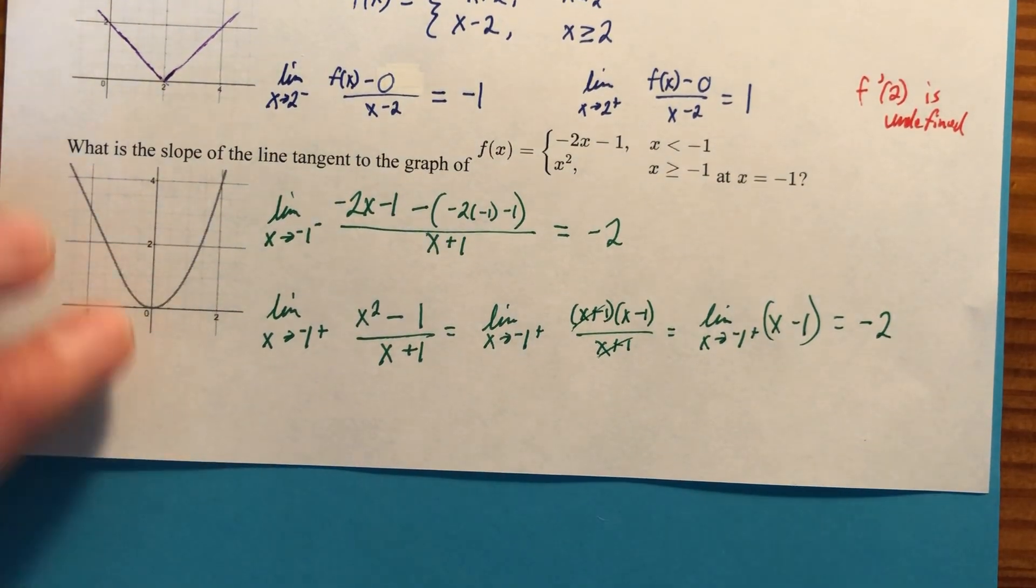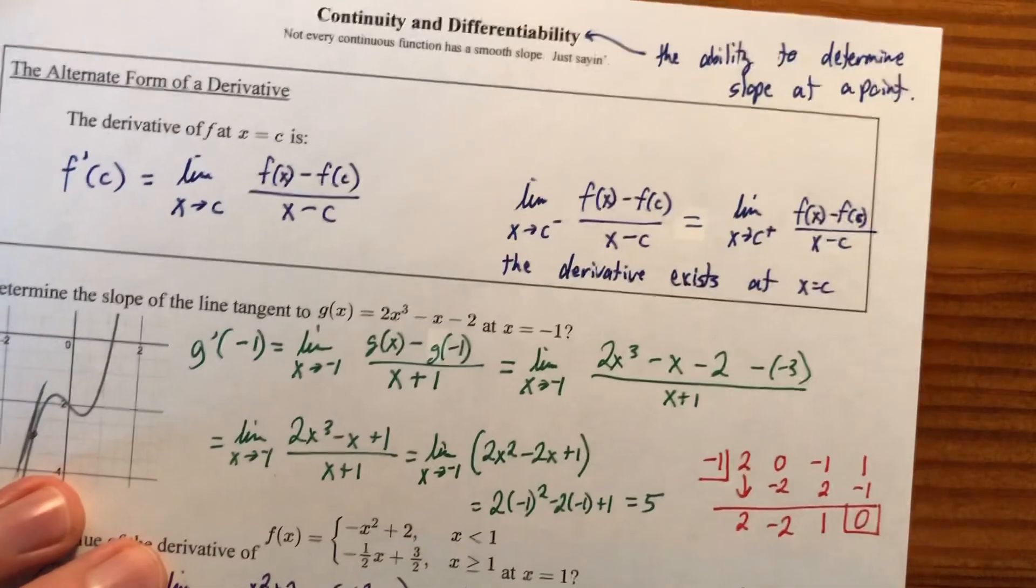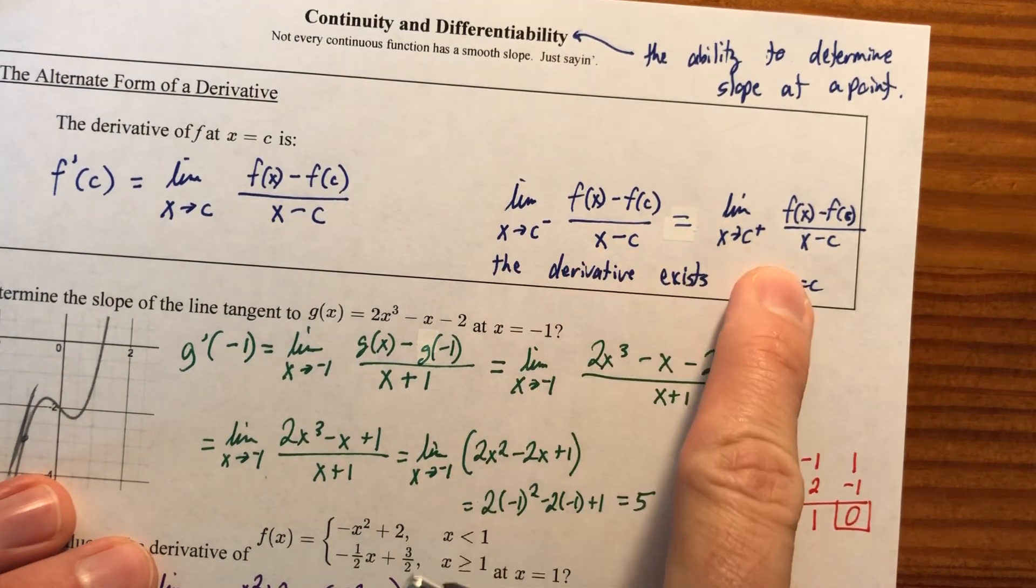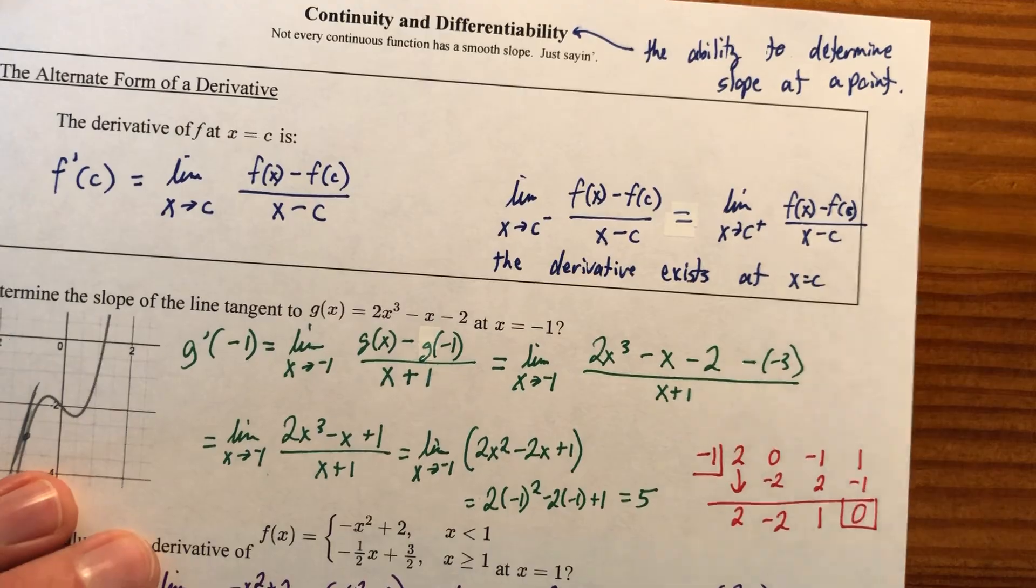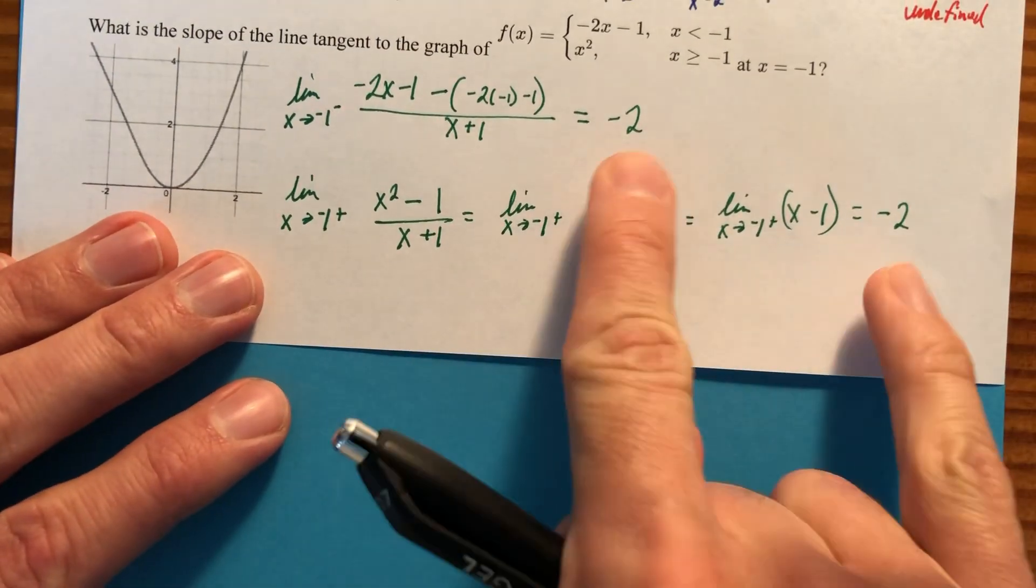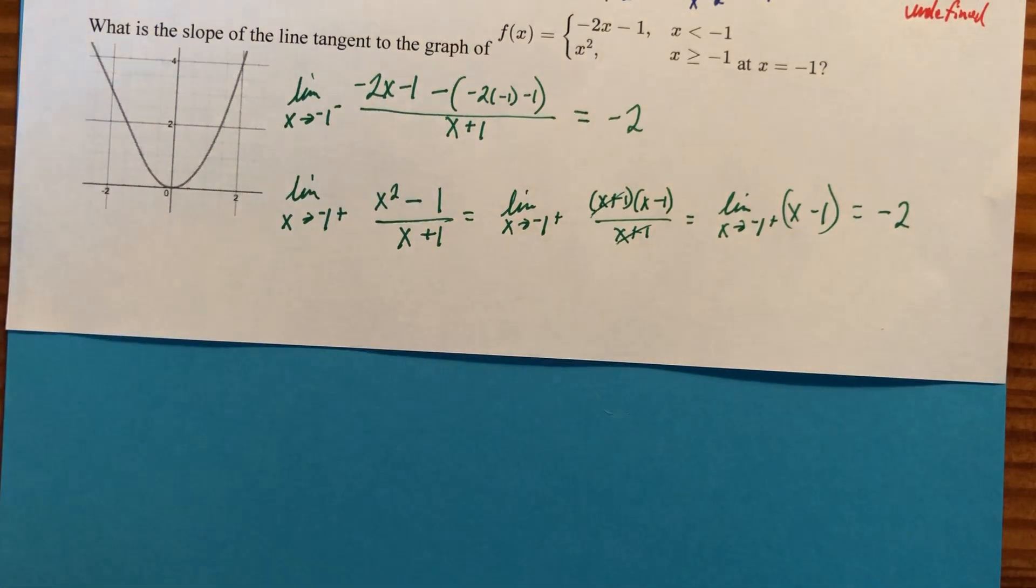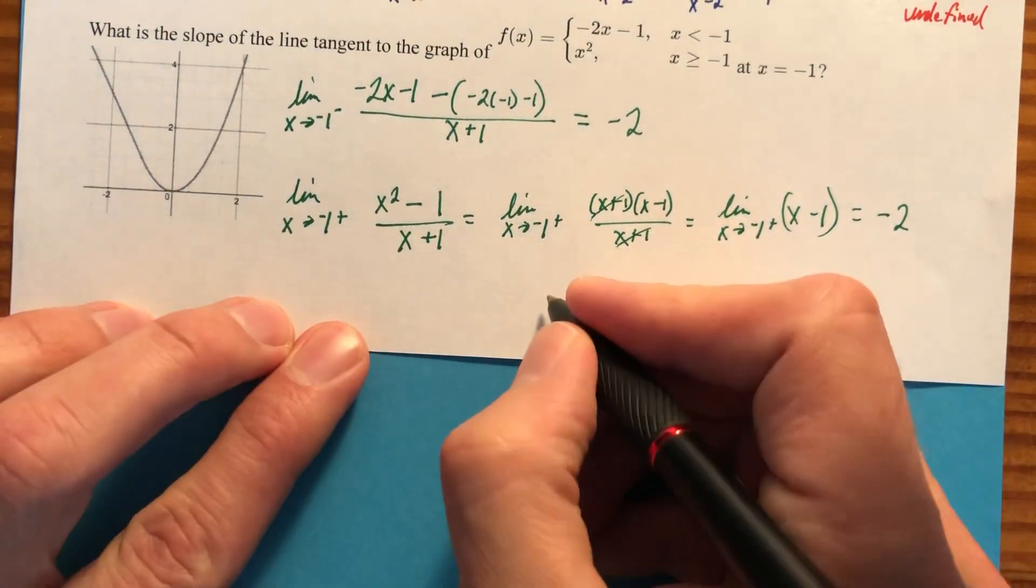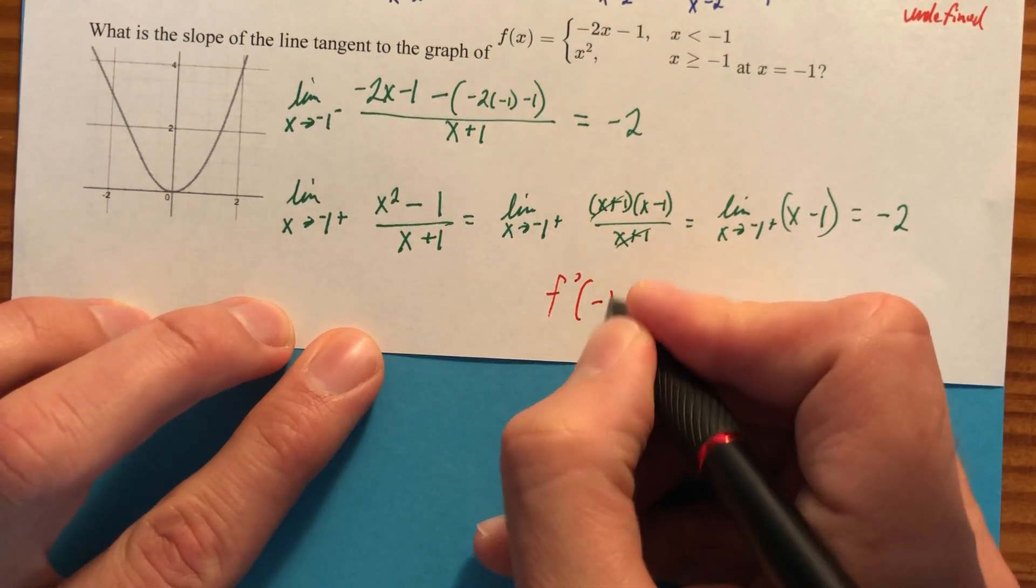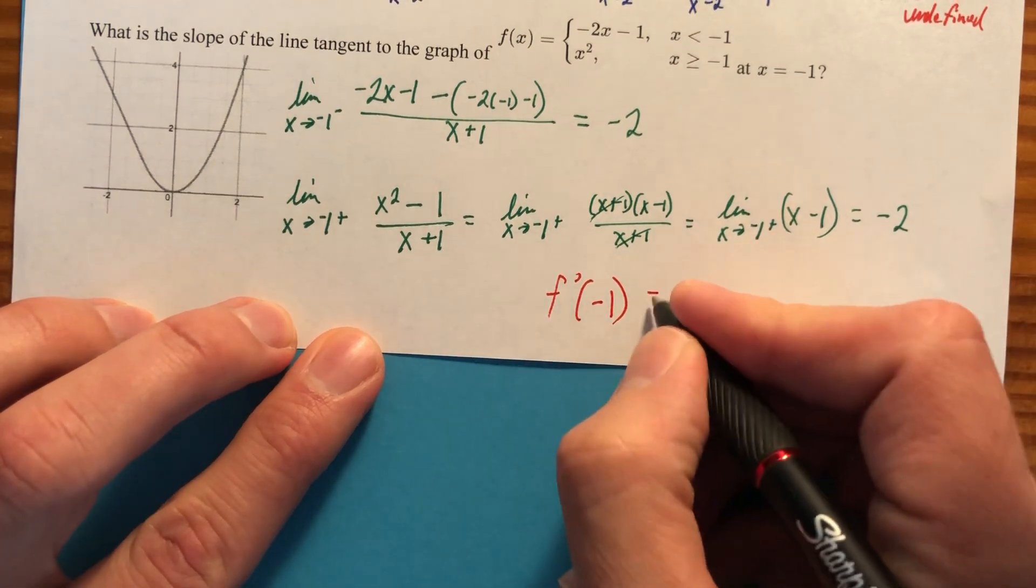Therefore, because, back to the top, the limit from the left matches the limit from the right. The derivative exists, and the derivative actually would be these two limits. It's whatever we found here. The slope from the left matches the slope from the right. Therefore, the final answer is f prime of negative one, the slope at negative one is negative two.